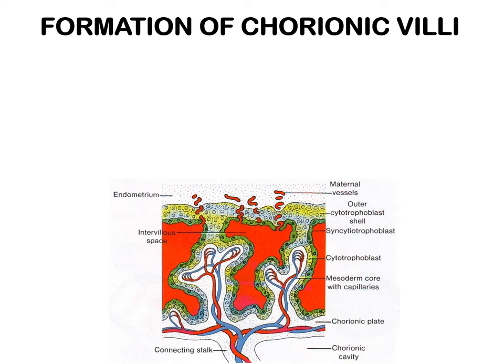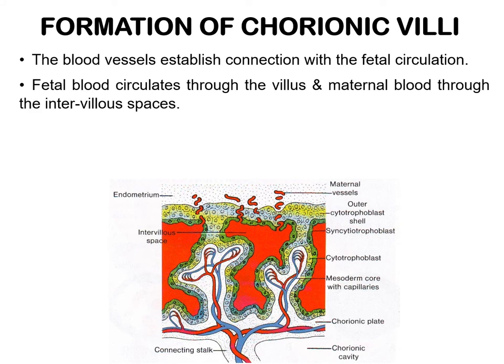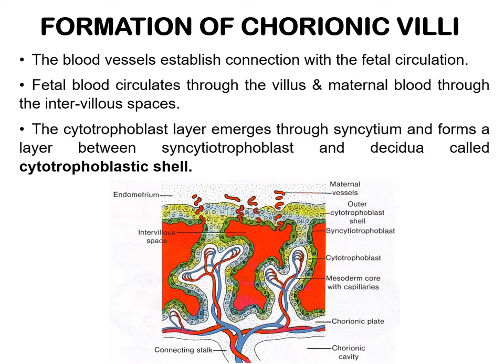The capillaries formed in the tertiary villi make contact with the capillaries developing in the connecting stalk, which in turn become connected with the intraembryonic circulatory system. Now the fetal blood circulates through the villus and the maternal blood through the intervillus spaces. The cytotrophoblastic cells also proliferate and penetrate through the syncytiotrophoblast to form an outer cytotrophoblastic shell, which gradually surrounds the chorionic sac and attaches it firmly to the maternal endometrial tissue.